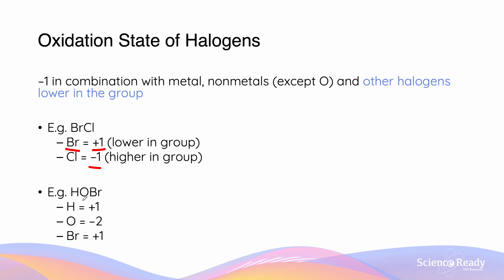This similarly occurs when in a compound with oxygen. Because oxygen is more electronegative than bromine, it is going to have a higher tendency to hold on to electrons, meaning it will have the lower oxidation state of −2. Hydrogen will have an oxidation state of +1, and therefore to make the compound neutral, bromine will have an oxidation state of +1.